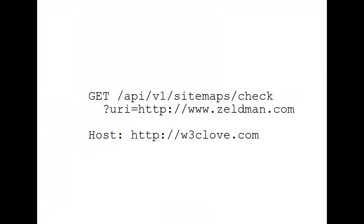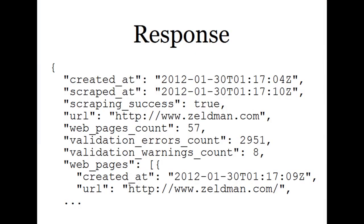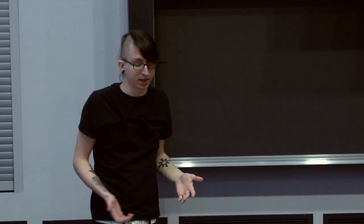I figured I would share this example of actually building an API in this way. Let's look at how it currently works. Right now, you send a GET request to API version one site maps check, and pass the URI in as a parameter. This makes a lot of sense. If you wanted to validate a website, you would make a GET request, send in the kind of thing you want, and it would give you a bunch of JSON back. This is the way most Rails-style APIs work. You get this response with tons of JSON with all your information.